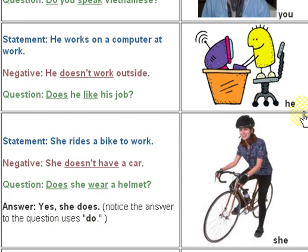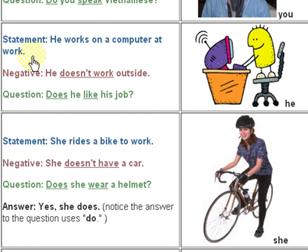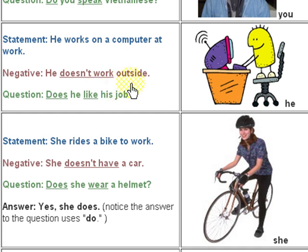Here we have 'he.' Statement: 'He works on a computer at work.' Negative: 'He doesn't work outside.' And the question: 'Does he like his job?'